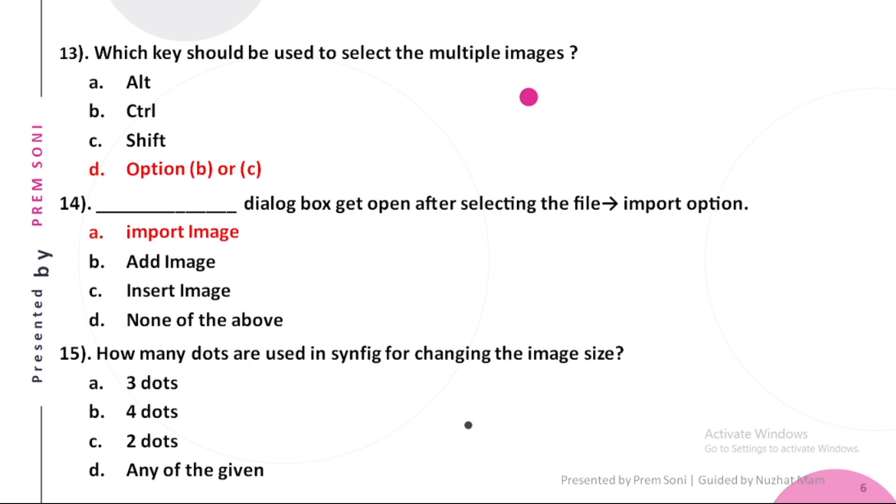Fifteenth, how many dots are used in Synfig for changing the image size? Options are: a. 3 dots, b. 4 dots, c. 2 dots, d. Any of the given. The answer is 2 dots.